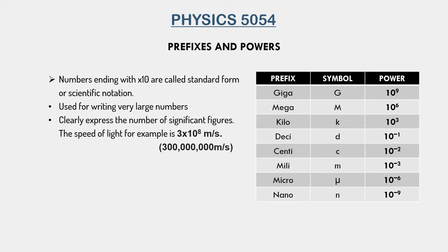Kilo has a small k and represents 10 to the power 3. Deci has a small d as its symbol and its power is 10 to the minus 1, meaning it is smaller than a normal unit — so 1 second is 10 times greater than 1 decisecond. Centi has the symbol small c and the power 10 to the minus 2. Milli has a small m and its power is 10 to the minus 3. Micro has a Greek letter mu-like symbol and stands for 10 to the minus 6. Nano has a small n and is 10 to the minus 9. This is as far as you will study in O-level physics.